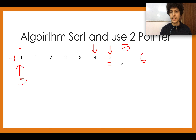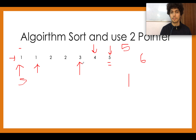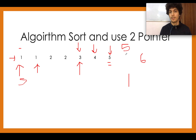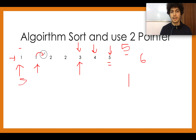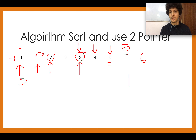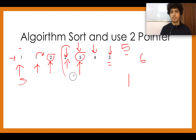Increment the answer count, then move the start pointer forward and the end pointer back. Now one plus three equals four, which is less than five, so we increment the start pointer. Now two plus three equals five — we found another pair. Reduce both pointers; they merge and we break out of the loop.